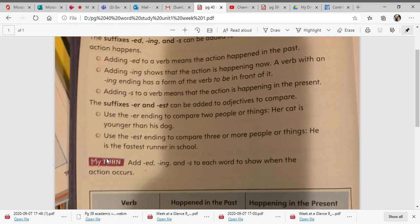The suffixes er and est can be added to adjectives to compare. Use the er ending to compare two people or things. For example, her cat is younger than his dog. Use the est ending to compare three or more people or things. He is the fastest runner in the school, so he is being compared to everybody else in the school.